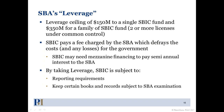An SBIC can get up to $150 million to a single SBIC fund in leverage financing. For a family of SBIC funds — defined as two or more licenses under common control — they can get up to $350 million in leverage. By getting leverage, the SBIC pays a fee to the SBA which defrays costs and any losses for the government. SBICs are also subject to certain reporting requirements and must keep books and records subject to SBA examination.